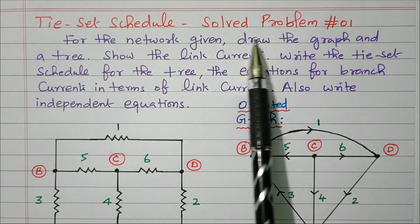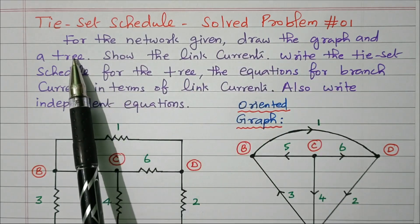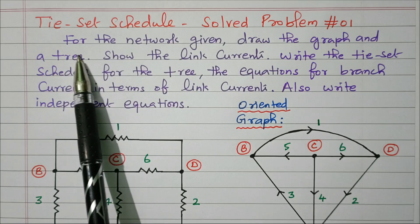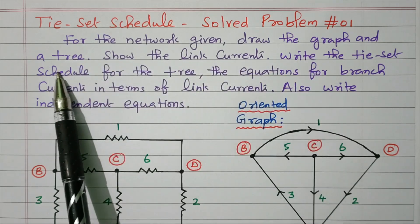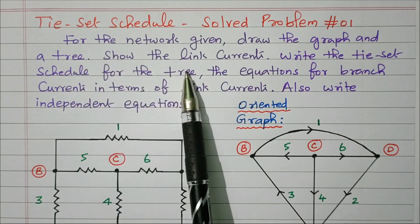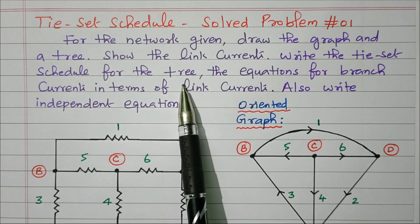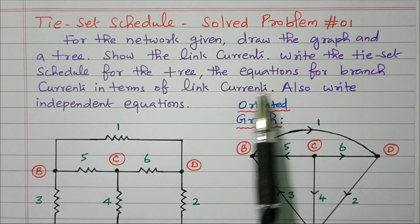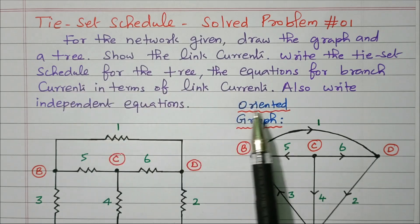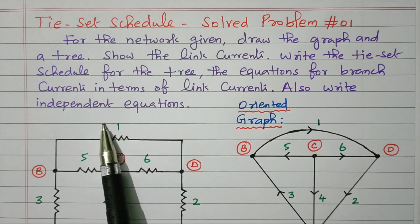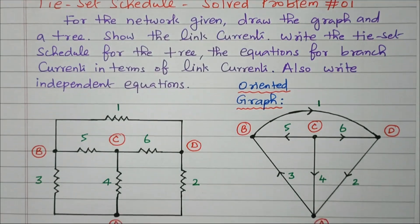Tie set schedule, solved problem 1, coming under the network topology. The problem statement is: for the network given, draw the graph and a tree. Find the link currents and write the tie set schedule for the tree. Write the equation for branch current in terms of link current, and also write the independent equations. These are all the parameters we need to identify.